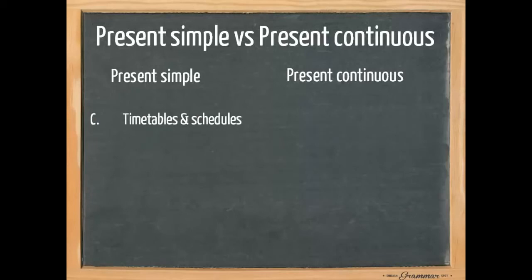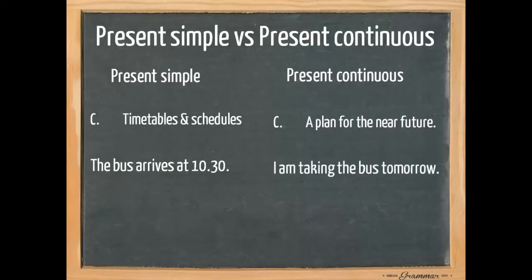Finally, we use the present simple for timetables and schedules. For example, the bus arrives at 10.30. We use the present continuous for a plan in the near future. We know when it's going to happen. For example, I'm taking the bus tomorrow.